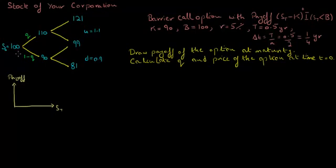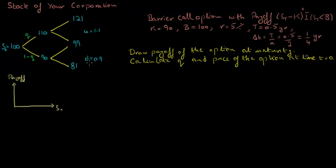We are given a two-period binomial tree that shows possible prices the stock of your corporation could take over the next six months. Currently, the stock price denoted by S0 equals 100, and with risk-neutral probability Q, the stock price could go up in each period by a factor of U, which equals 1.1, or with risk-neutral probability 1 minus Q, the stock price could go down by a factor of D, which equals 0.9.